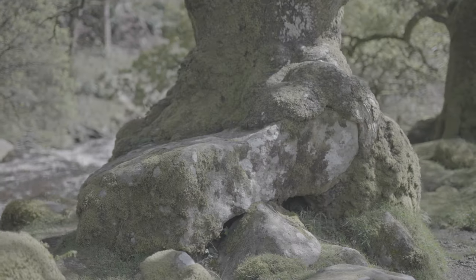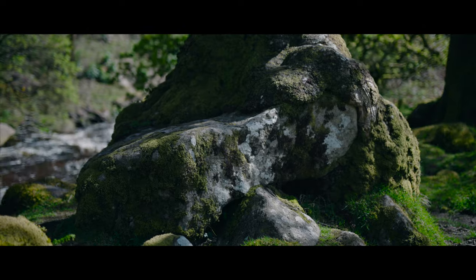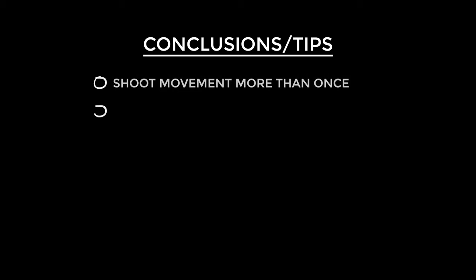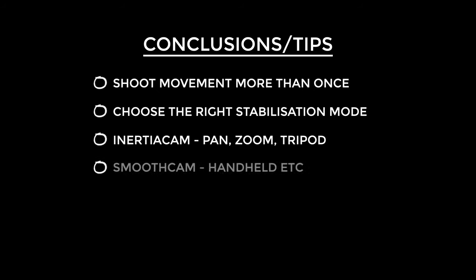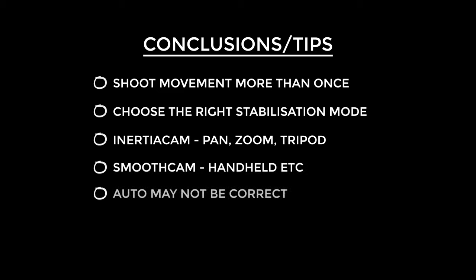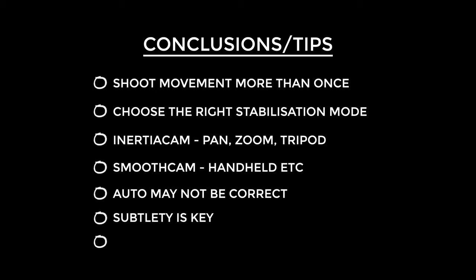So that was inertia cam, and of course that's what we did with smooth cam. Now let me give you some stabilization top tips. First, shoot that camera move a couple of times if you can so you can pick the best one. Be sure to pick the right type of stabilization mode — inertia cam for panning and zooming shots, not forgetting tripod mode, and smooth cam for everything else. Personally I prefer the control you get with smooth cam. The default automatic setting might be fine but trust your gut. Be subtle with the controls, especially the translation smooth slider — the more subtle you can be the more natural it's going to look. I'd also recommend getting some sort of handle for your camera as I find it adds that extra little bit of stability.